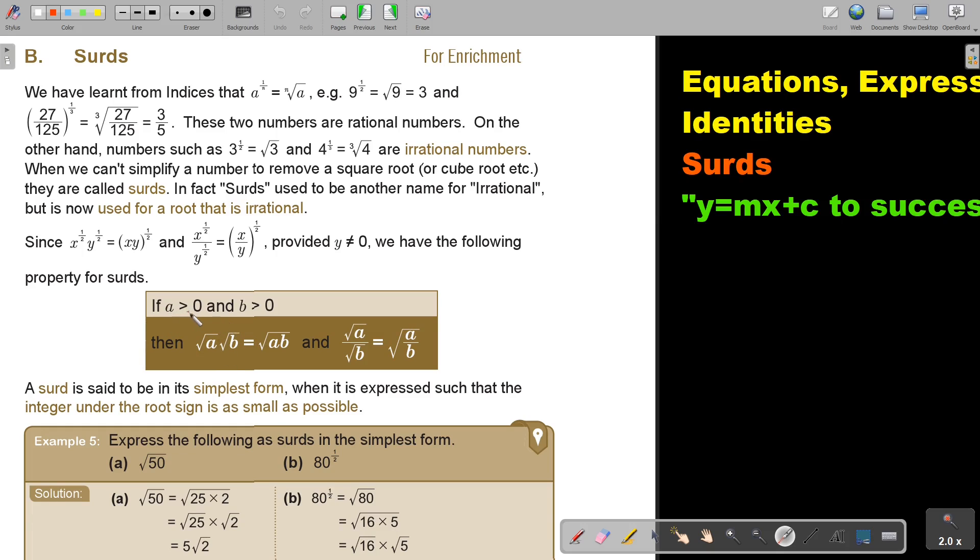Now, this is very important. A is bigger than 0 and B is bigger than 0. Then you can write it separate, but you can make one root and write both inside. Separate one root and divide both inside. So you can go to this side, but you can also go to this side, this side, or go back.